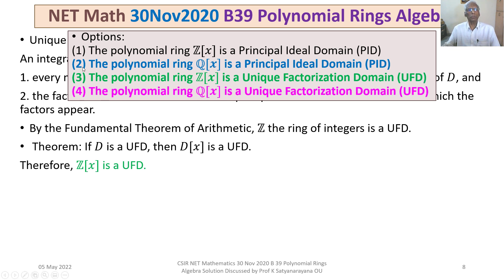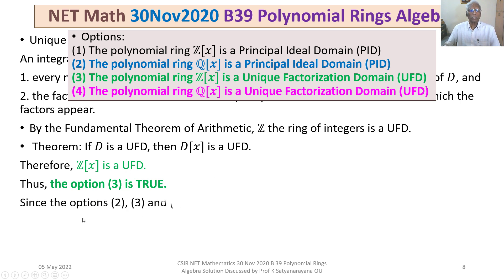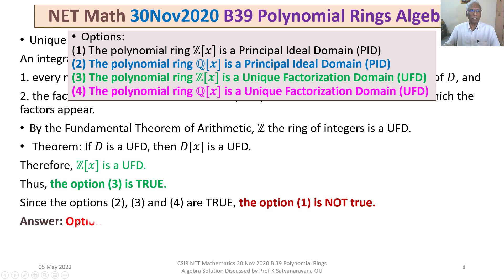So options 2, 3, and 4 are all true. Since this is a problem from section B where only one answer is correct — the one that is not true — students will identify option 1 as their answer. Since options 2, 3, and 4 are true, option 1 is not true. Therefore, our answer is option 1.